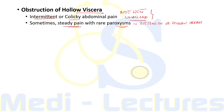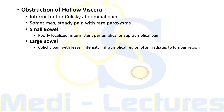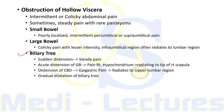In small bowel obstruction, pain is usually poorly localized, intermittent, periumbilical or supraumbilical. With progressive dilatation, there is decrease in muscle tone, loss of the colicky nature, and pain becomes steady. In large bowel obstruction, colicky pain of lesser intensity is typically present in the infraumbilical region, often radiating to the lumbar region. Sudden distension of the biliary tree causes steady pain from the very beginning — thus the term 'biliary colic' is a misnomer.